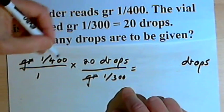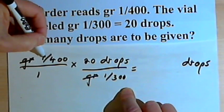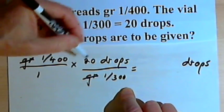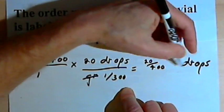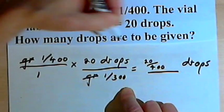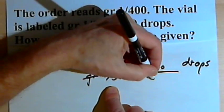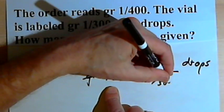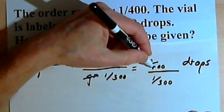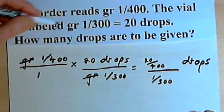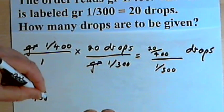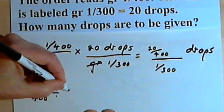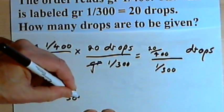and let's make a little more room. I'm going to be left multiplying across, I've got 1 over 400 times 20. So that's 20 over 400, that's drops. The denominator is going to be this fraction, 1 over 300. So I've got 20 over 400 divided by 1 over 300. Let's write that as division. 20 over 400 divided by 1 over 300.